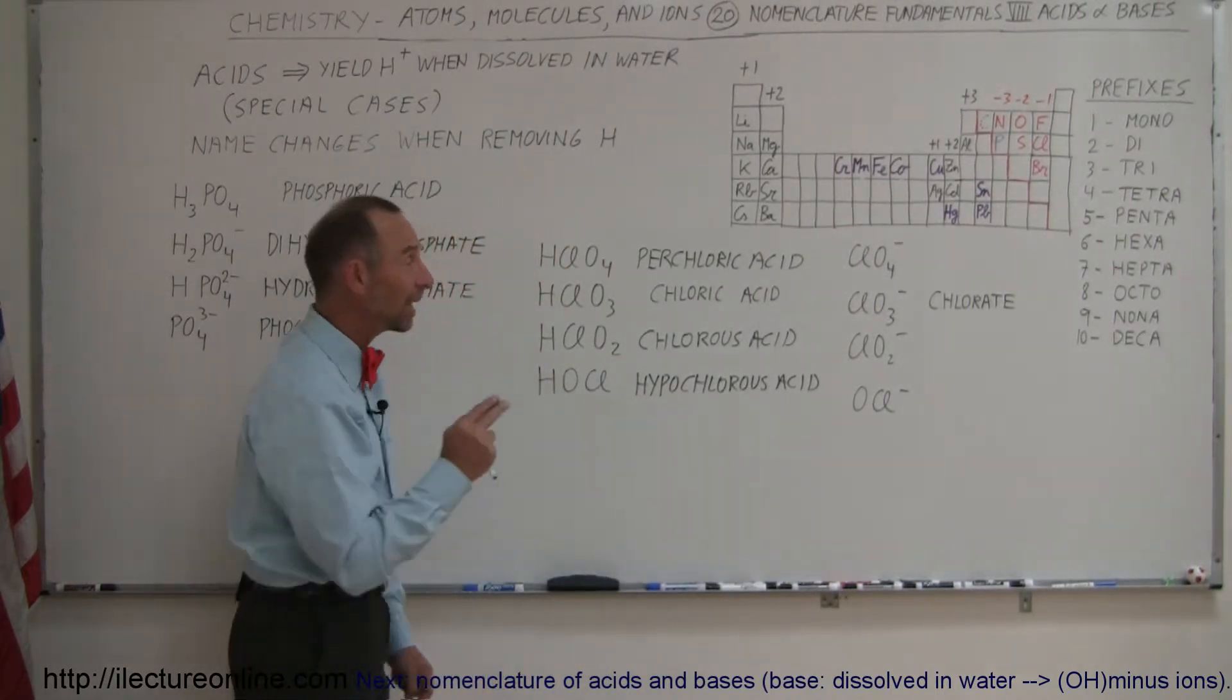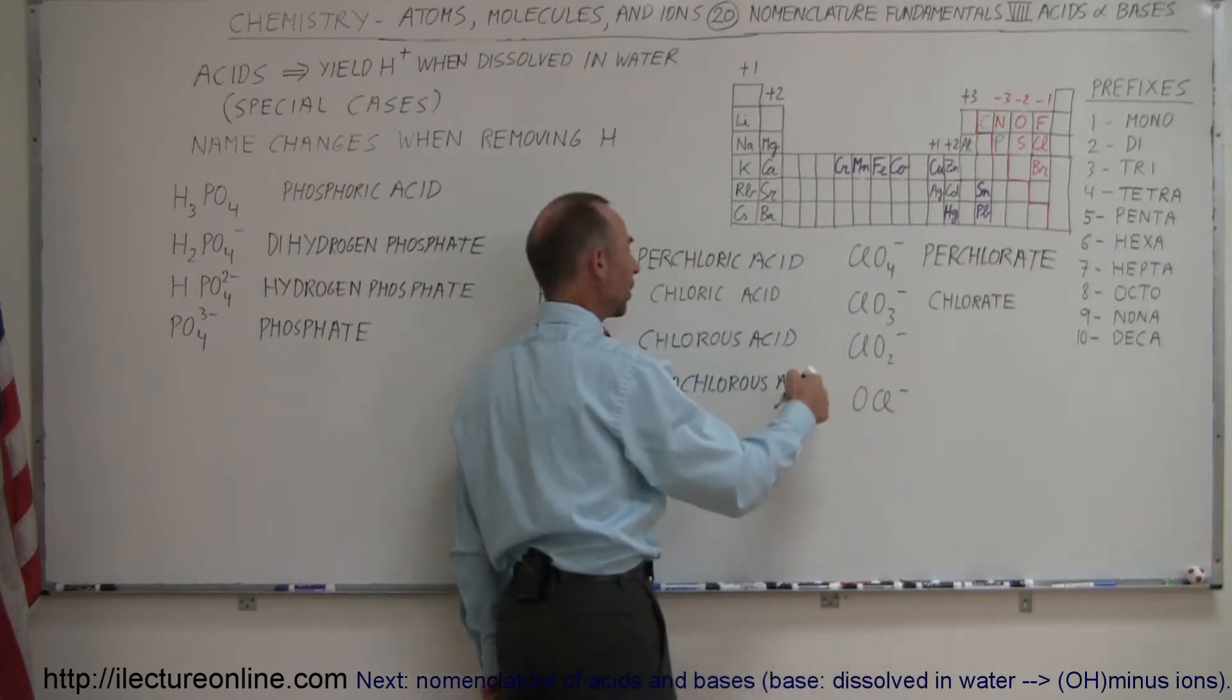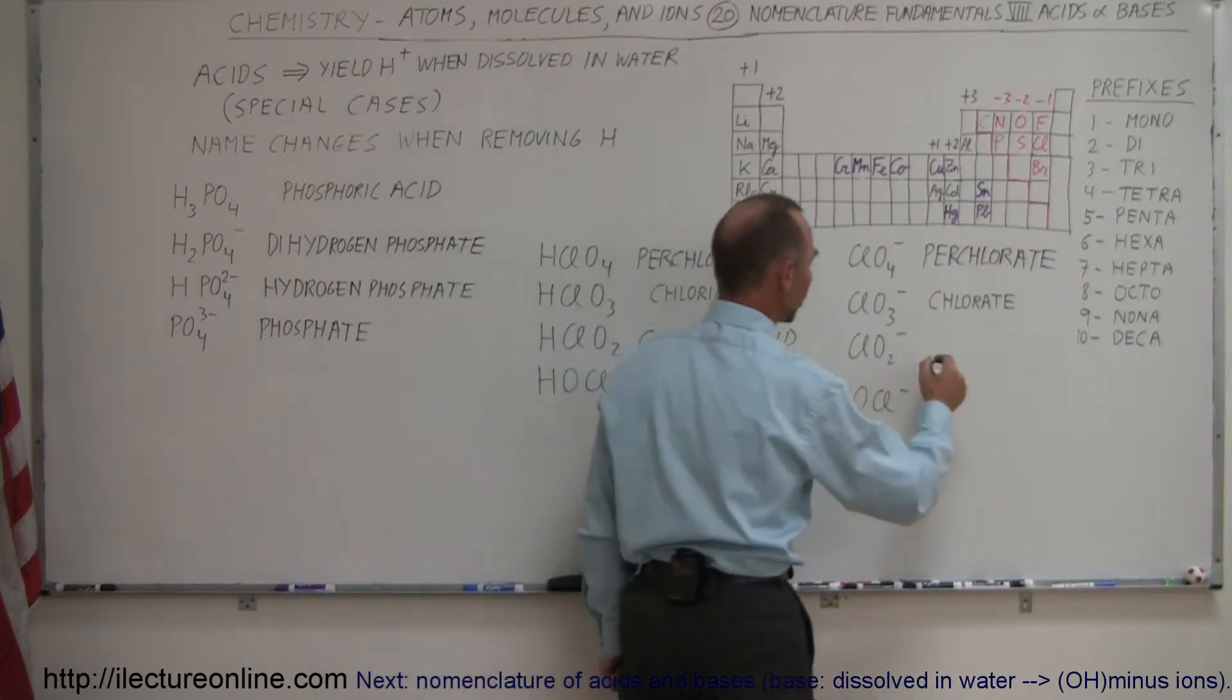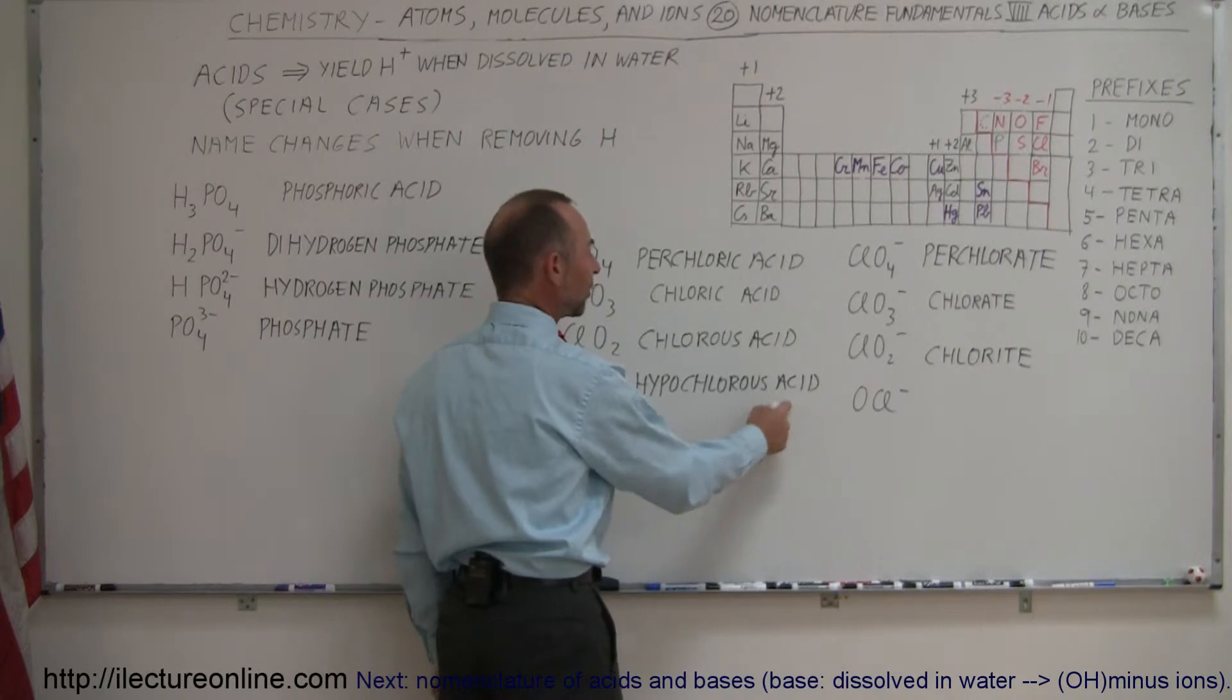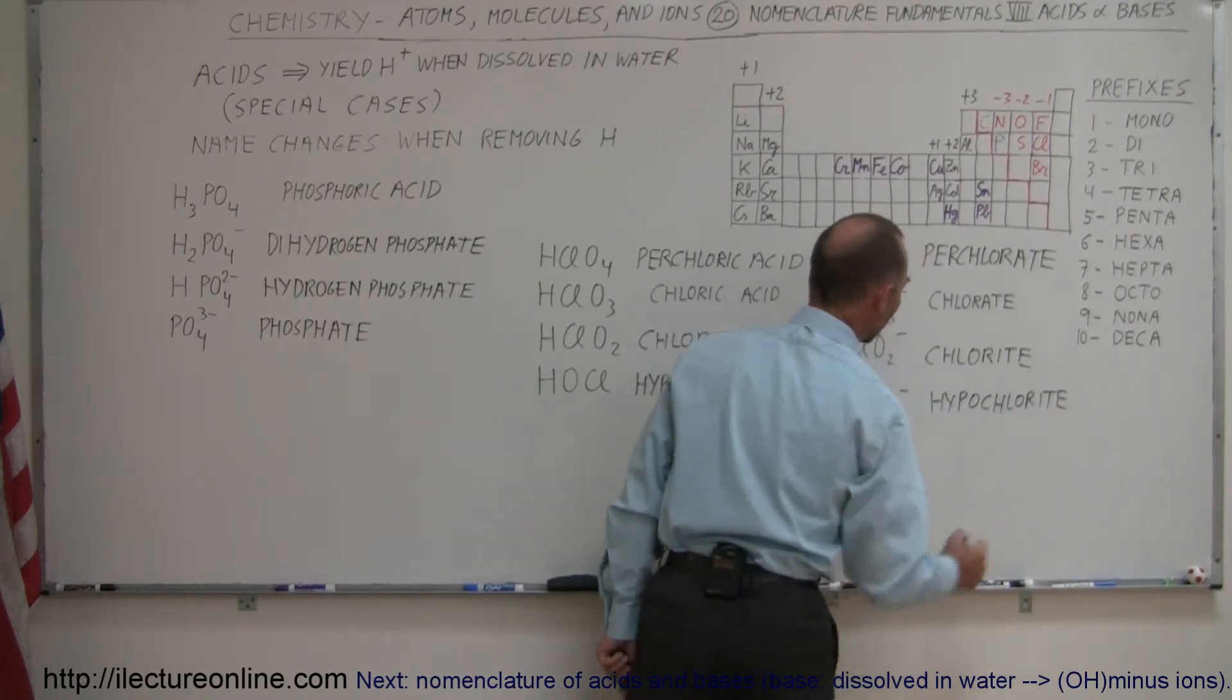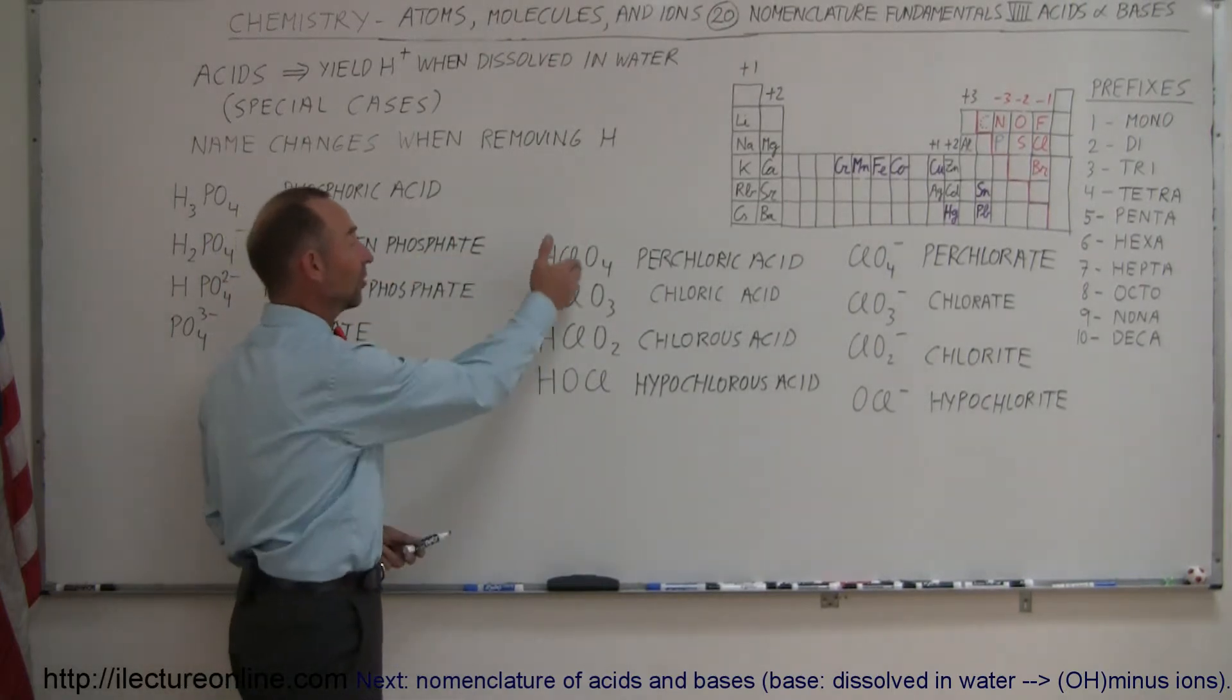So the names of the corresponding ions change just the same. So this would be the perchlorate ion. And here the ight becomes the ight. The rules for ions is that when we have chlorous acid, the corresponding ion would be chlorite ion. And then here the hypochlorous acid becomes the hypochlorite ion when we remove the hydrogen, hypochlorite ion.